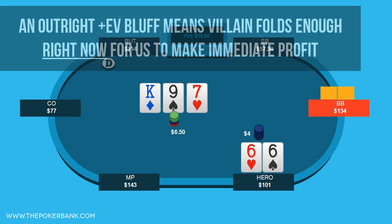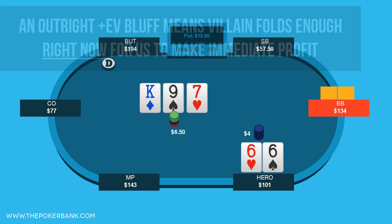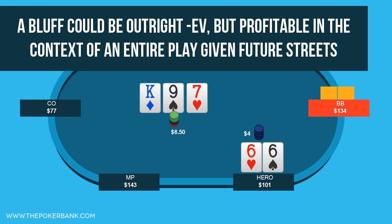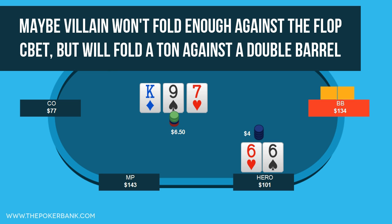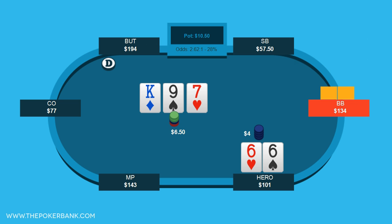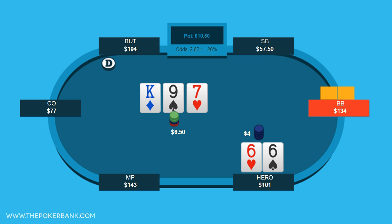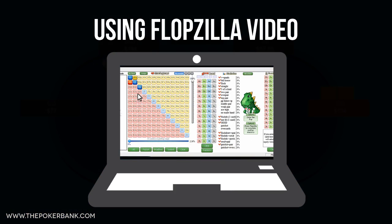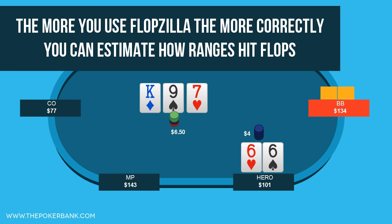I purposefully use the word outright, since there are plenty of times in poker where a single bet may be outright plus EV or negative EV, but in the context of an entire play it can swing the other way. For instance, there are spots where the continuation bet may be outright negative EV because he doesn't fold enough given the breakeven percentage, but he'll fold a ton of turns and rivers, thus making the overall play plus EV. I personally use the tool Flopzilla to work that out, and with enough off-table practice with a tool like this, you can more correctly visualize how common ranges hit or miss common flop textures.